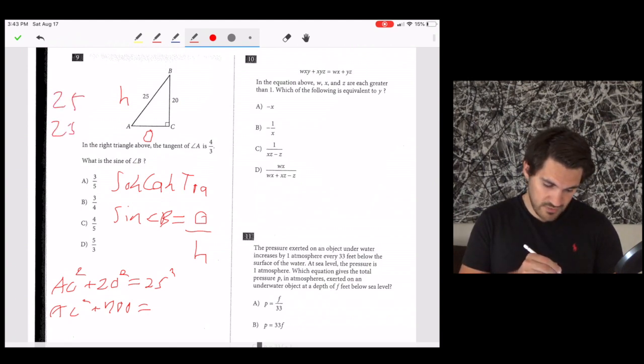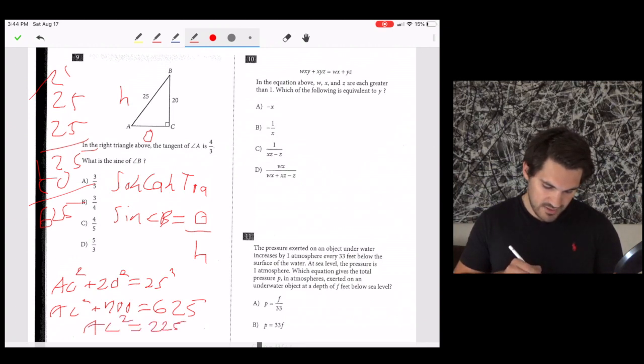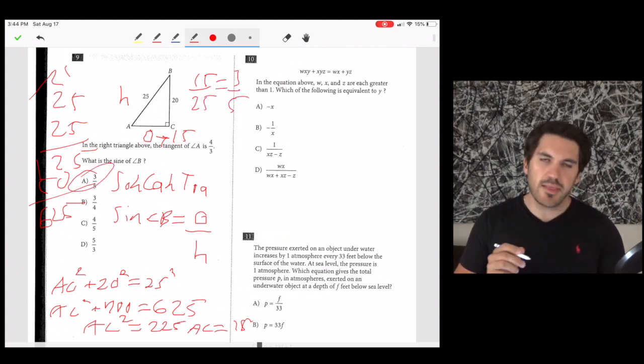25 times 25 is 625. So AC squared is going to equal 225. AC equals the square root of that, which is 15. Sine is the opposite over hypotenuse. So it's 15 over 25. Divide both by 5, and you get 3 over 5. And that's one way to solve it. There's a few ways to solve this question.